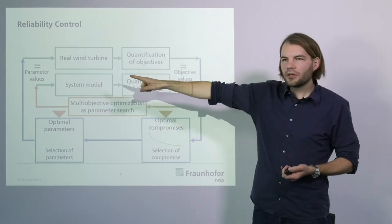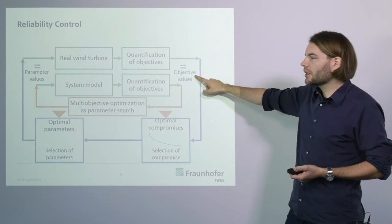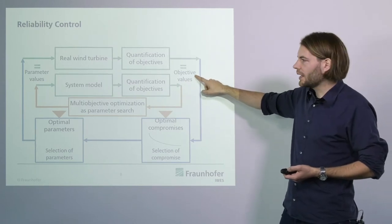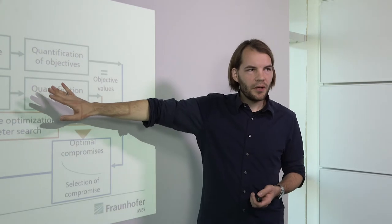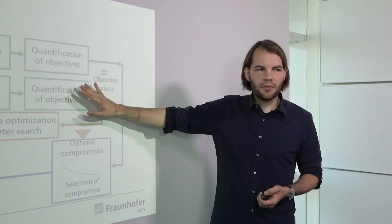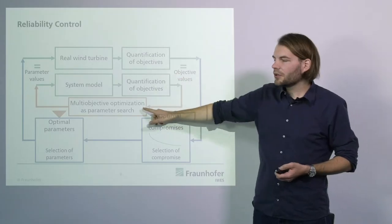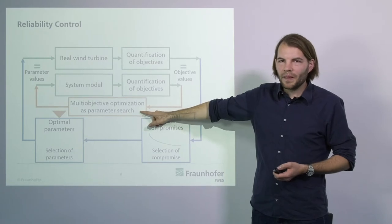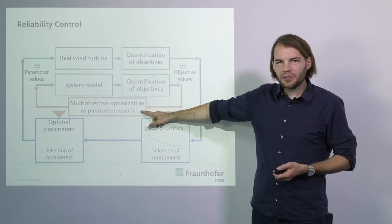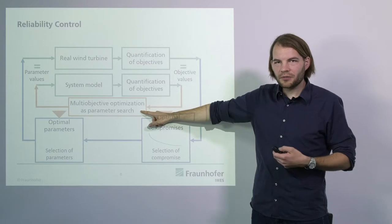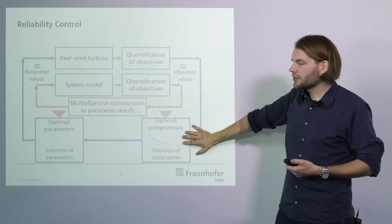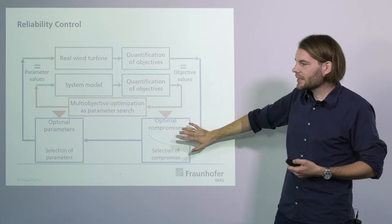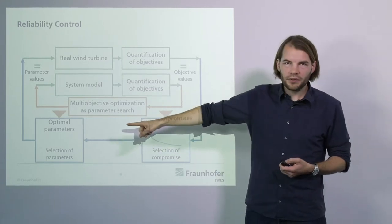If we have the same controller configuration in the beginning and the same parameters for the controllers, we assume that we get the same objective values out at the end. We then use the system model and the quantification of the objective values and feed this into a multi-objective optimization. With that we find optimal trade-offs between the different objectives, giving us a set of optimal compromises and the corresponding parameters for the controllers.